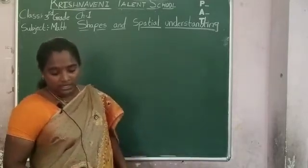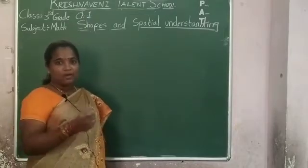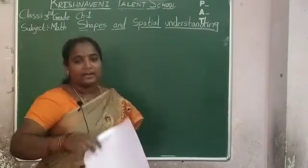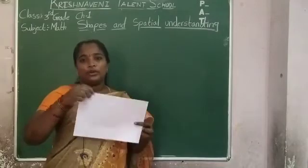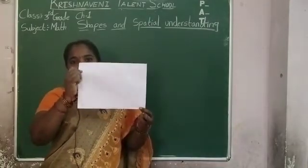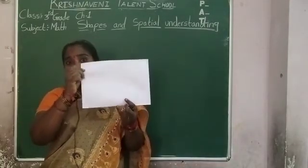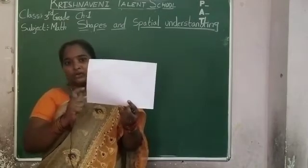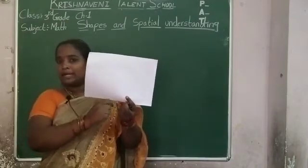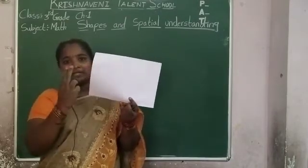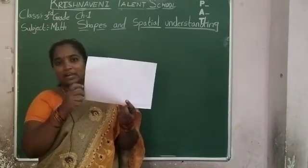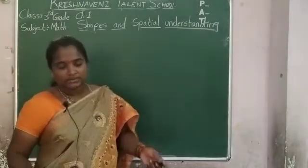What are the 2D shapes? Which objects have length and breadth? They are called 2D shapes. I have a paper — this is an example of a 2D shape. See, length and breadth — only two dimensions are there. So that is why this is called a 2D shape.